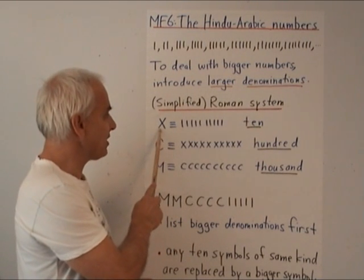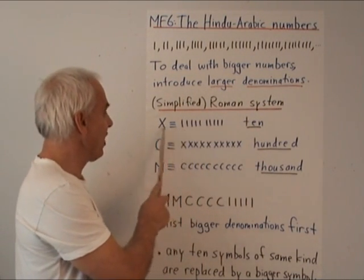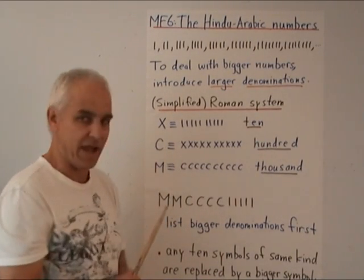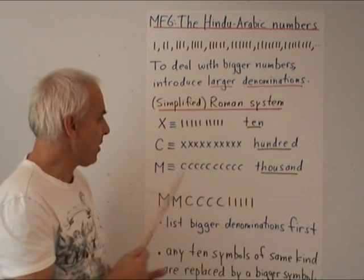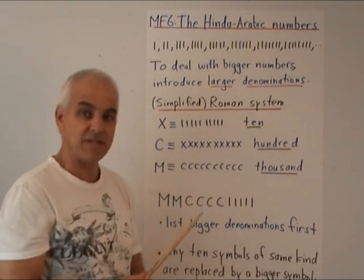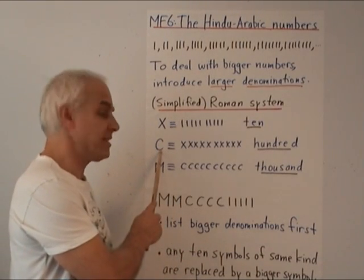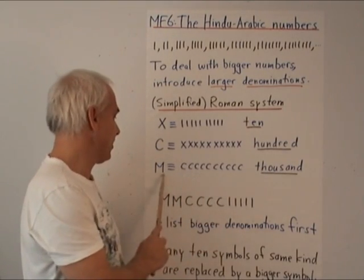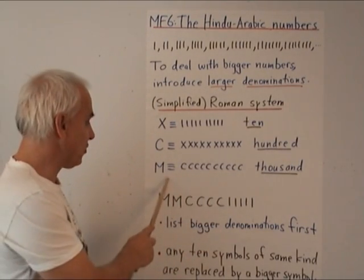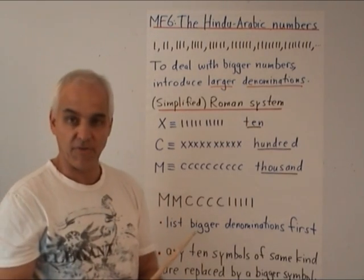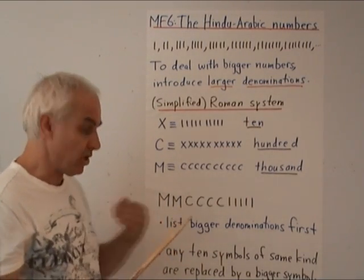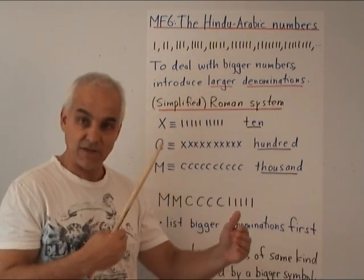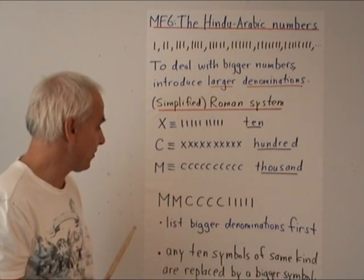The Romans introduced new symbols for larger numbers. The basic step is to take ten ones — a string of ten ones — and call it ten, denoted by the symbol X. Then ten X's, meaning ten tens, is denoted by C and called a hundred. Ten hundreds are denoted by M and called a thousand. So instead of a huge string of ones, we group ones into tens, tens into hundreds, and hundreds into thousands and so on.